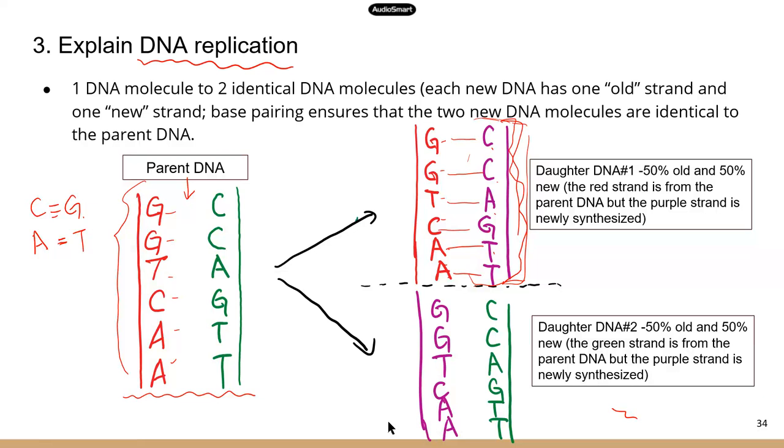And the same thing for the other strand, the green strand. So we're going to use that as a template. And the enzyme will know that when there is a C, it's going to put a G in that position. If there's an A, it's going to insert a T. So again, that's how the enzyme synthesizes the new strand.